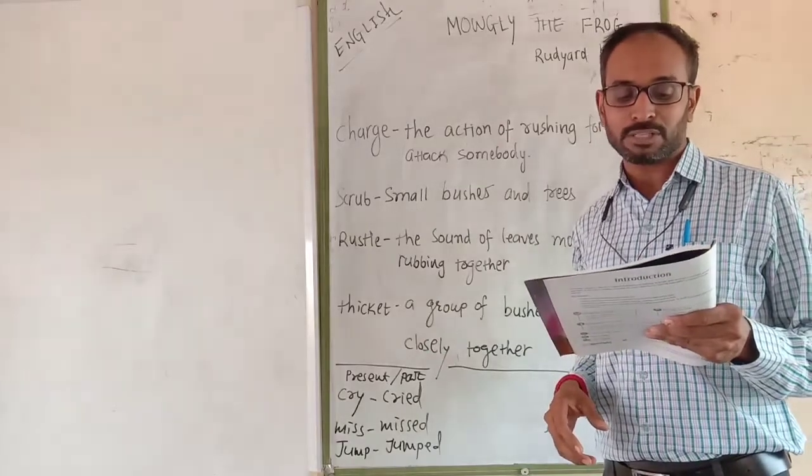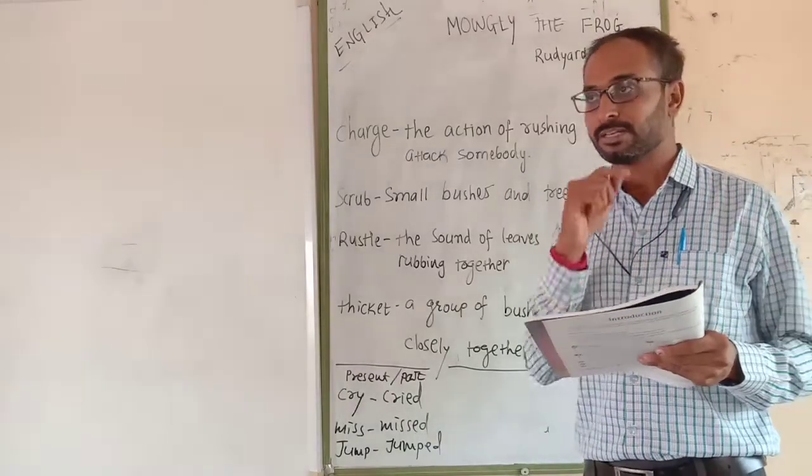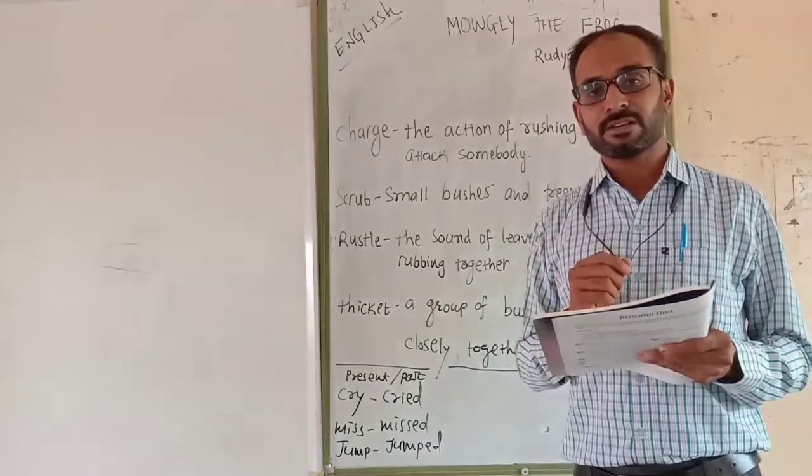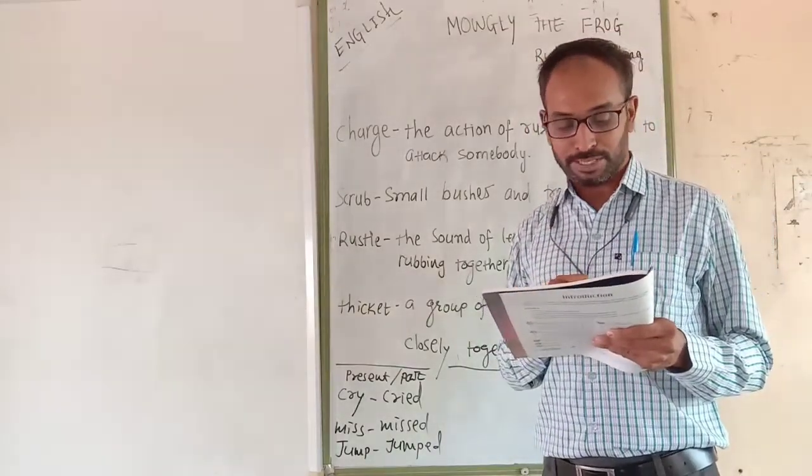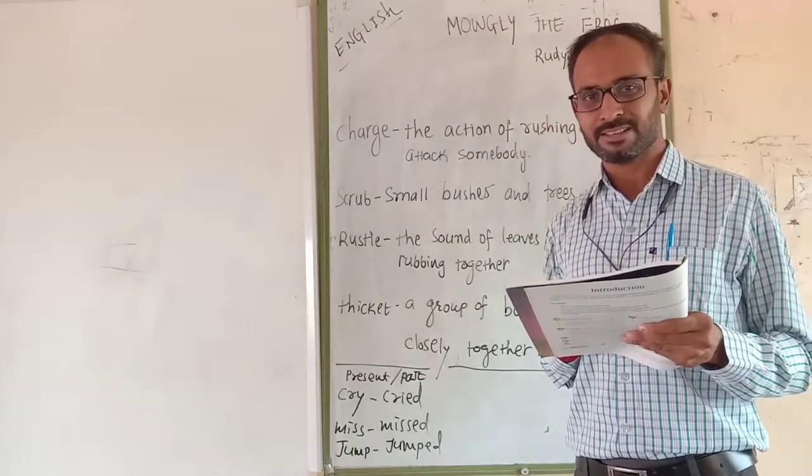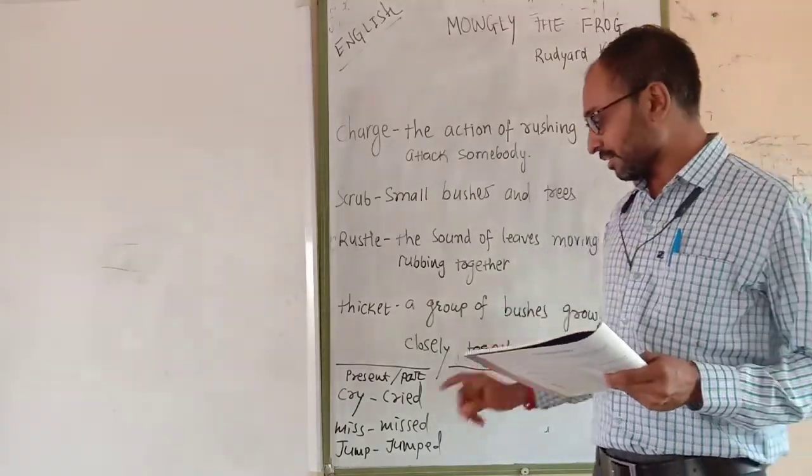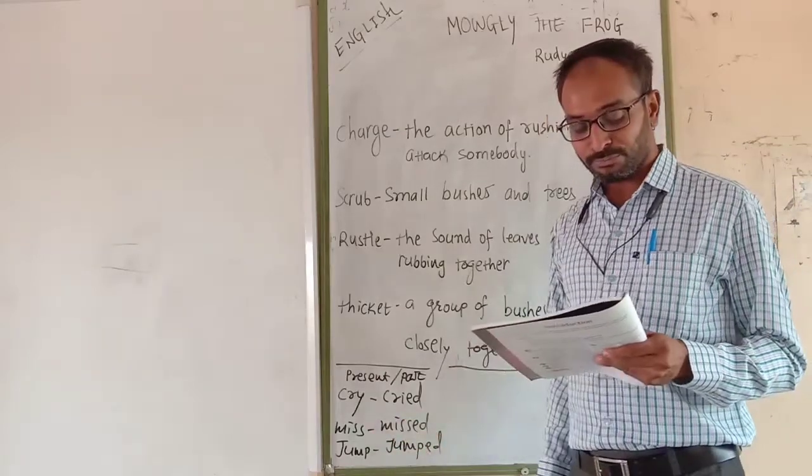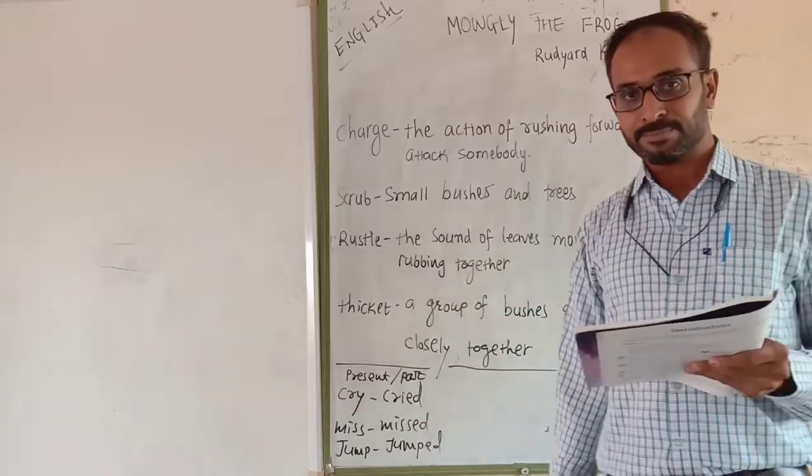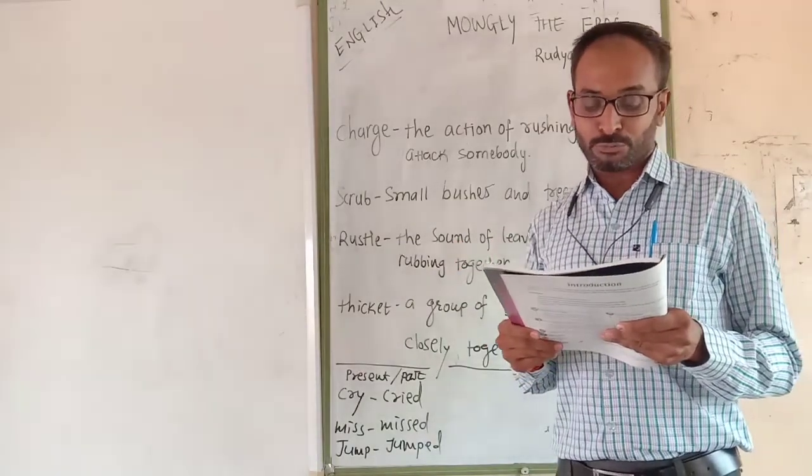Then there was a howl, an untigerish howl from Shere Khan. You also heard this name in the Jungle Book. Shere Khan is also a famous character of the Jungle Book story. He has missed. What is it? You see that the word miss and its past tense is missed. Here is missed. So father wolf read out, he has missed.